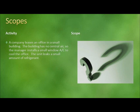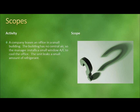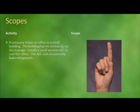To properly understand scopes, let's look at a few examples. In the first example, a company leases an office in a small building. The building has no central air, so the manager installs a small window AC to cool the office. The unit leaks a small amount of refrigerant. Is this refrigerant leak an example of scope 1, scope 2, or scope 3? If you answered scope 1, you're correct. The refrigerants are being leaked on site as a result of an activity that is occurring on site. Therefore, these emissions are scope 1.